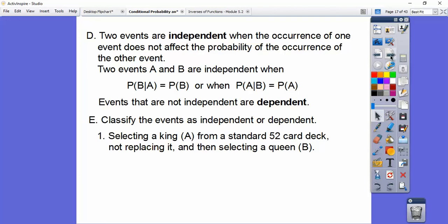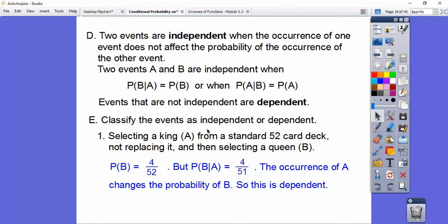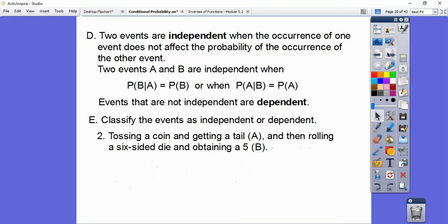So classify these as independent or dependent. Selecting a king is event A from a standard 52 card deck and not replacing it and then selecting a queen B. Well this one, the probability of B is 4 out of 52, but the probability of B given A was 4 out of 51. So the occurrence of event A changes the probability of event B. So this is dependent. And the fact because we're not replacing it, it totally depends on the card that we left out.